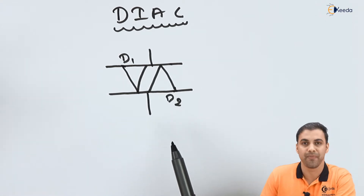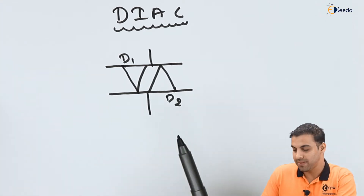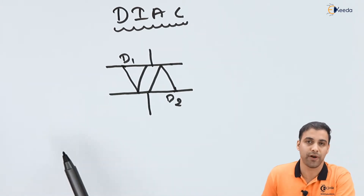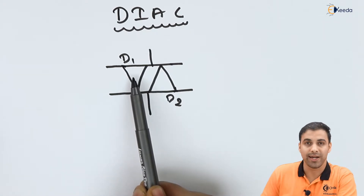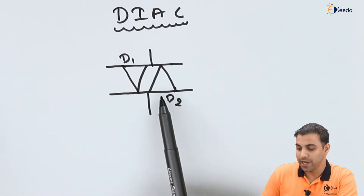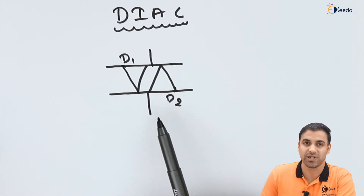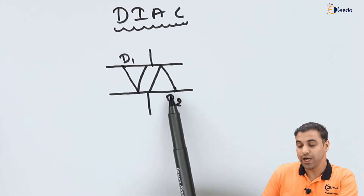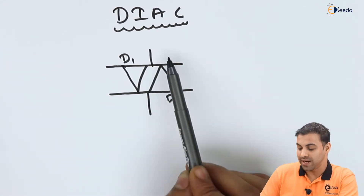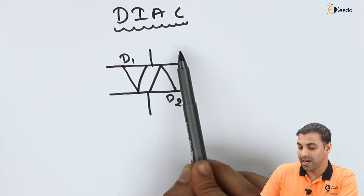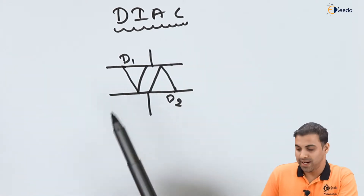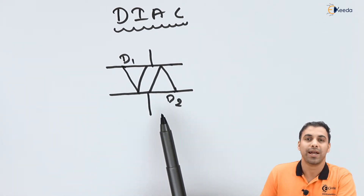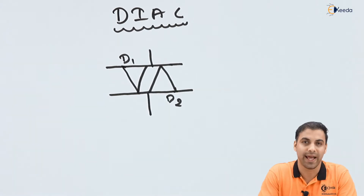Now if you can see this symbol, during the positive half cycle, if an AC supply is given to the DIAC circuit, D1 will conduct. During the negative half cycle, D2 will conduct, because during the positive half cycle D1 is forward biased, and during the negative half cycle D2 is reverse biased and the negative half cycle will be conducted.